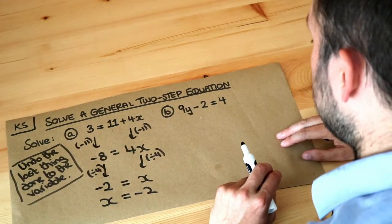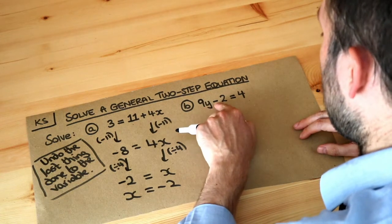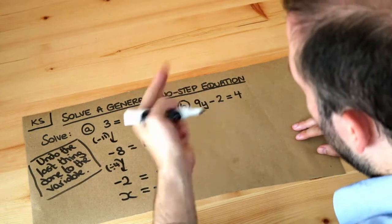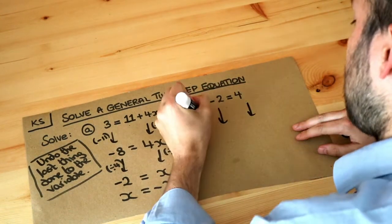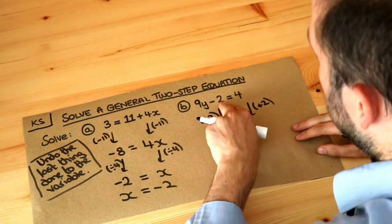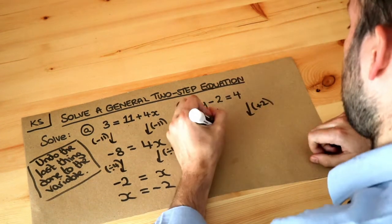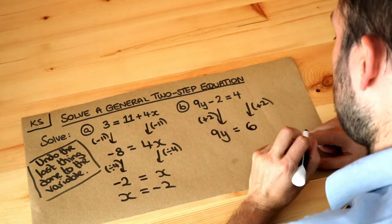What about the second one? Well let's think about the story of what's happening to y. It's been multiplied by 9 and then we're subtracting 2 from it. So we want to undo the last thing which was subtracting 2, and the opposite of subtracting 2 is adding 2. So if we add 2 to the left hand side of the equation that gets rid of the minus 2 just leaving 9y, and if we add 2 to the right hand side of the equation we get 6.